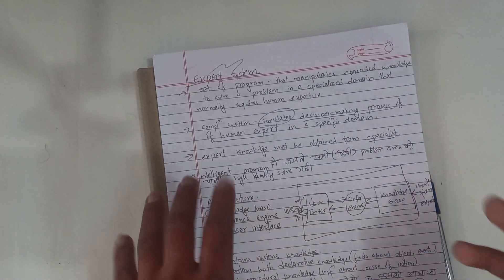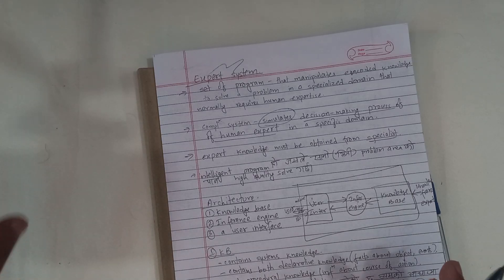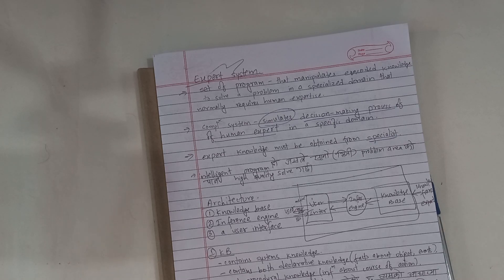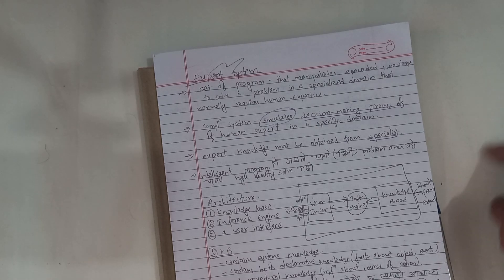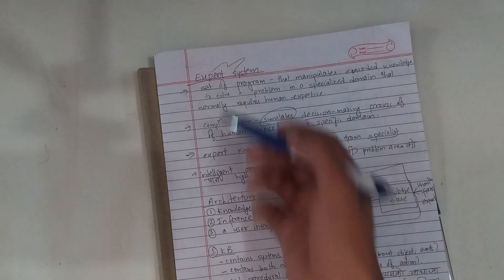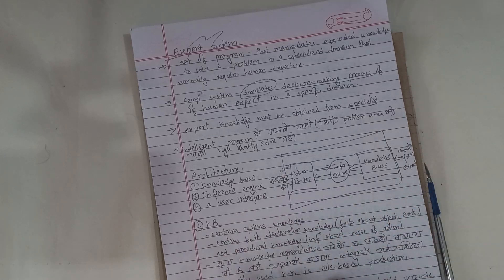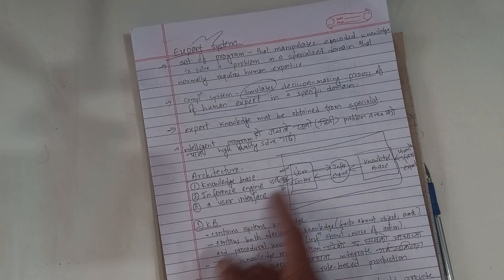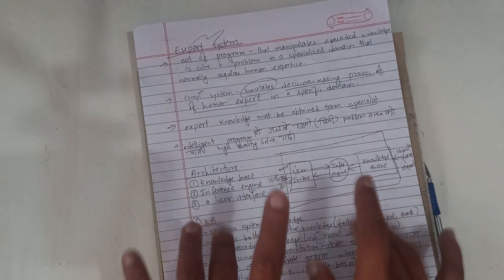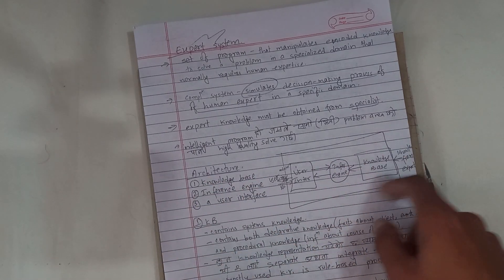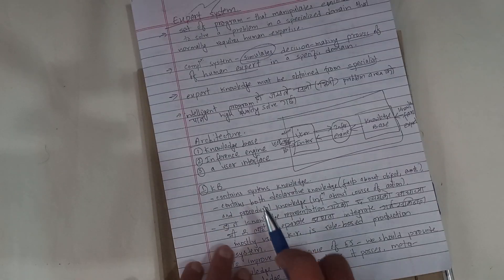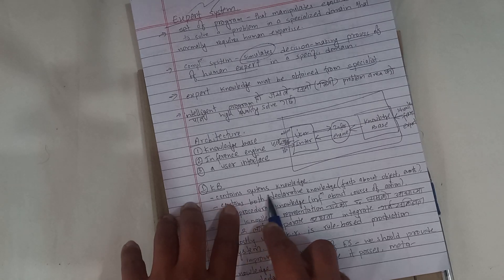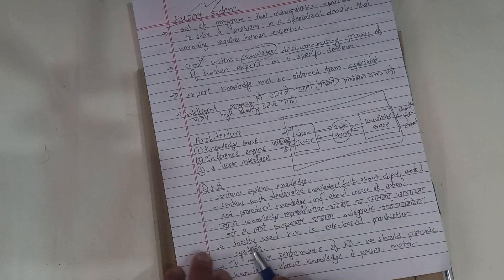We have to solve small areas with high quality. The components include the user interface, the inference engine, and the knowledge base. The knowledge base is powerful — these are knowledge base systems in that particular domain.